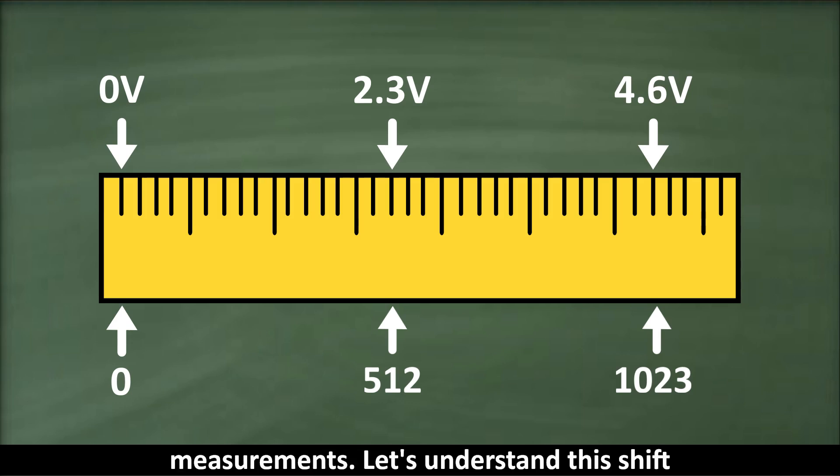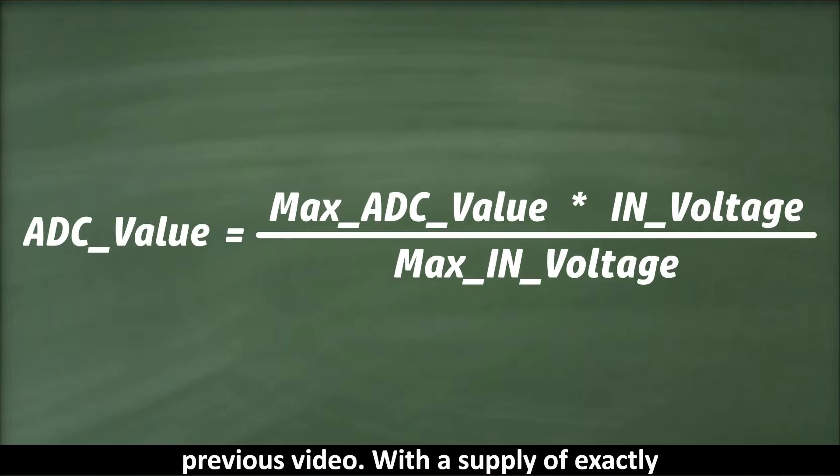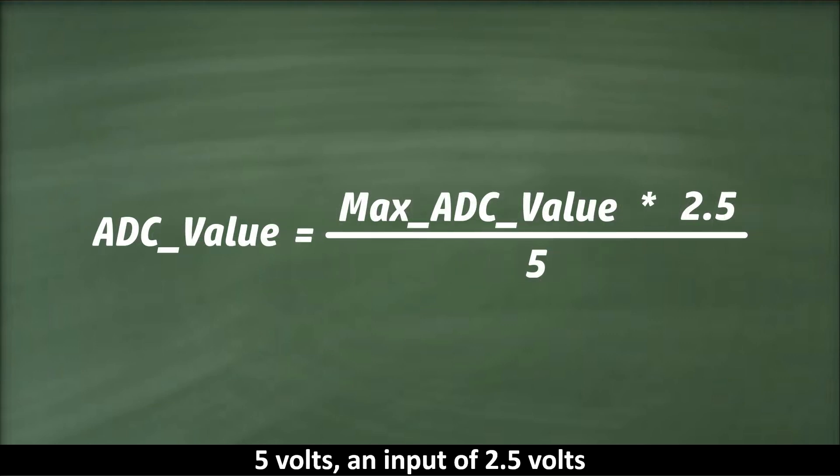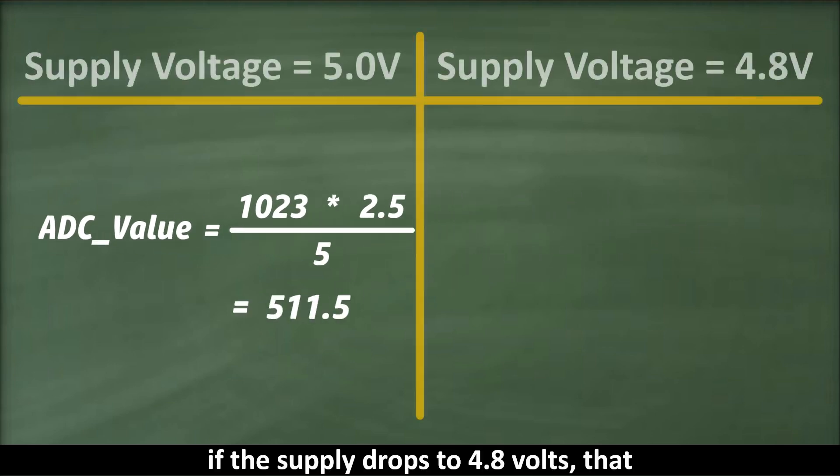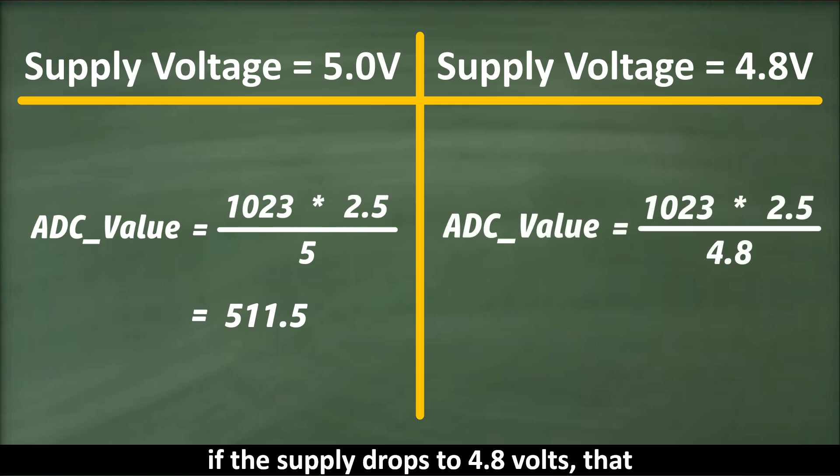Let's understand this shift using the formula we discussed in the previous video. With a supply of exactly 5 volts, an input of 2.5 volts corresponds to an ADC value of about 511.5. But if the supply drops to 4.8 volts, that same 2.5 volts, the ADC now gives around 532.8. That's quite a difference for the exact same input. To solve this issue,